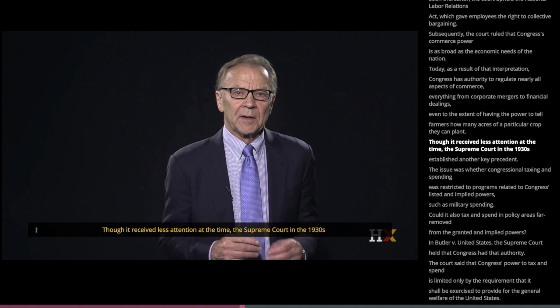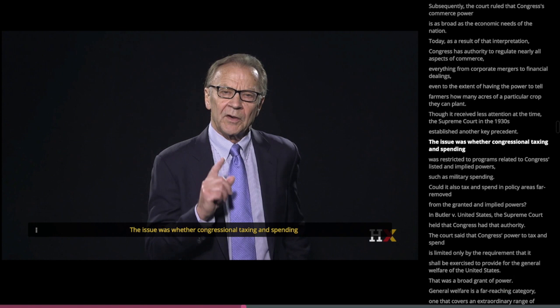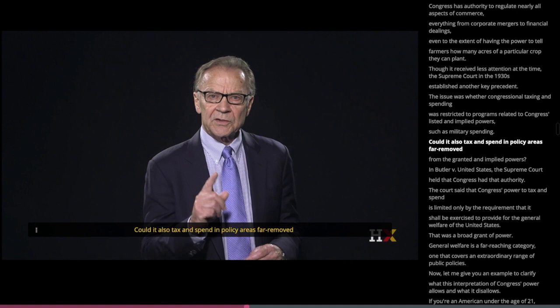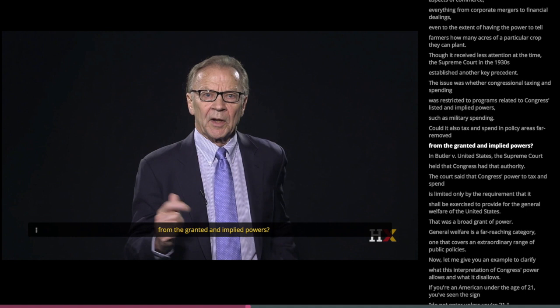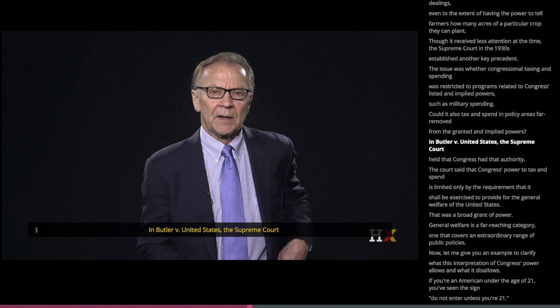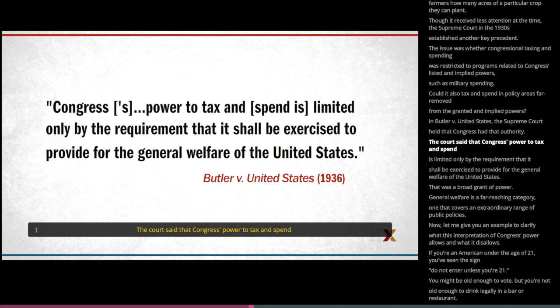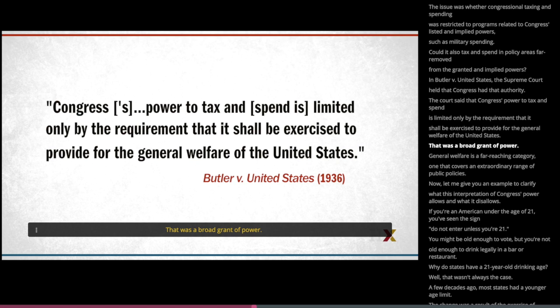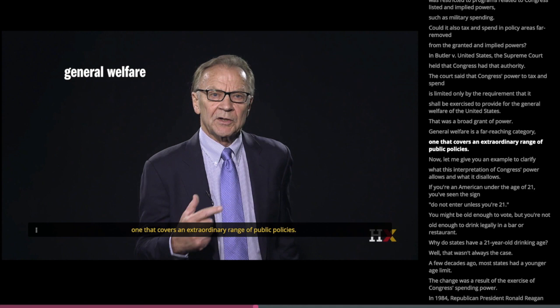Though it received less attention at the time, the Supreme Court in the 1930s established another key precedent regarding congressional taxing and spending. The issue was whether congressional taxing and spending was restricted to programs related to Congress's listed and implied powers, such as military spending, or whether it could also tax and spend in policy areas far removed from those powers. In Butler v. United States, the Supreme Court held that Congress had that broader authority — that Congress's power to tax and spend is limited only by the requirement that it shall be exercised to provide for the general welfare of the United States. That was a broad grant of power, as general welfare is a far-reaching category covering an extraordinary range of public policies.